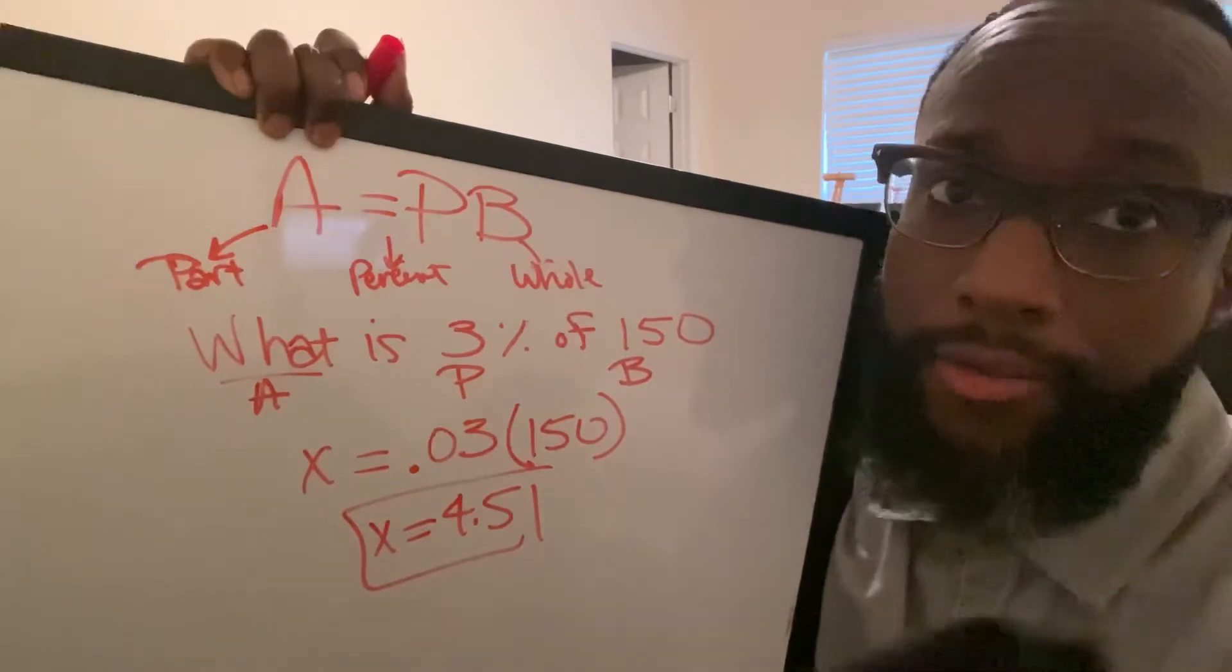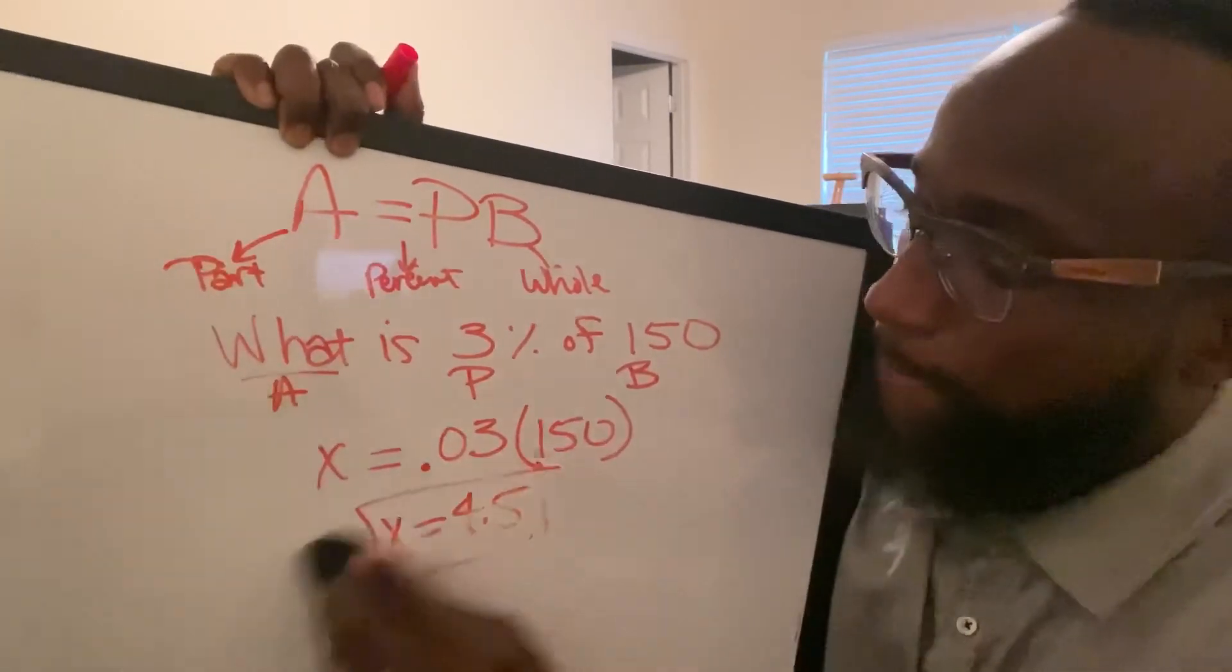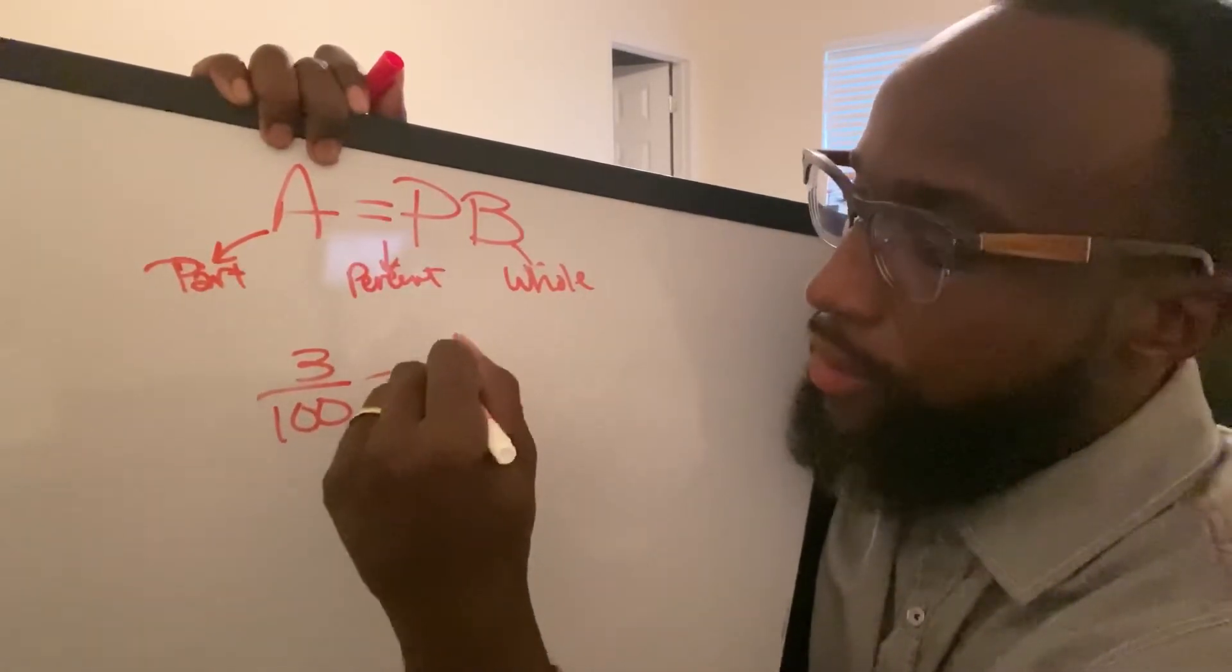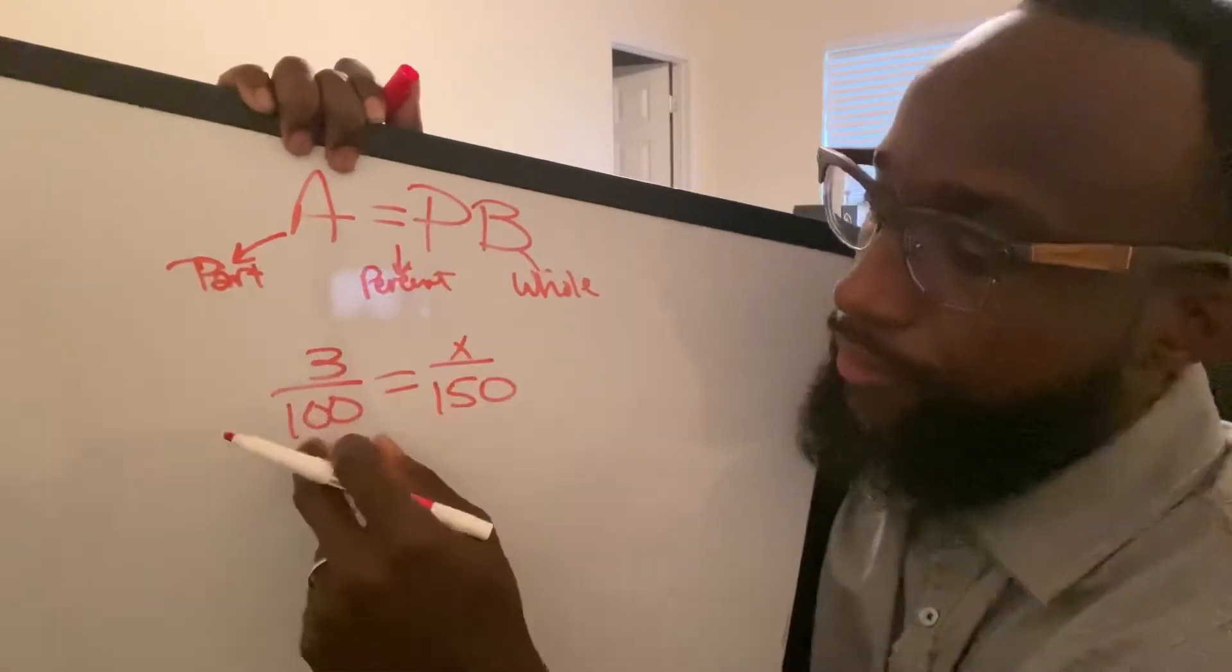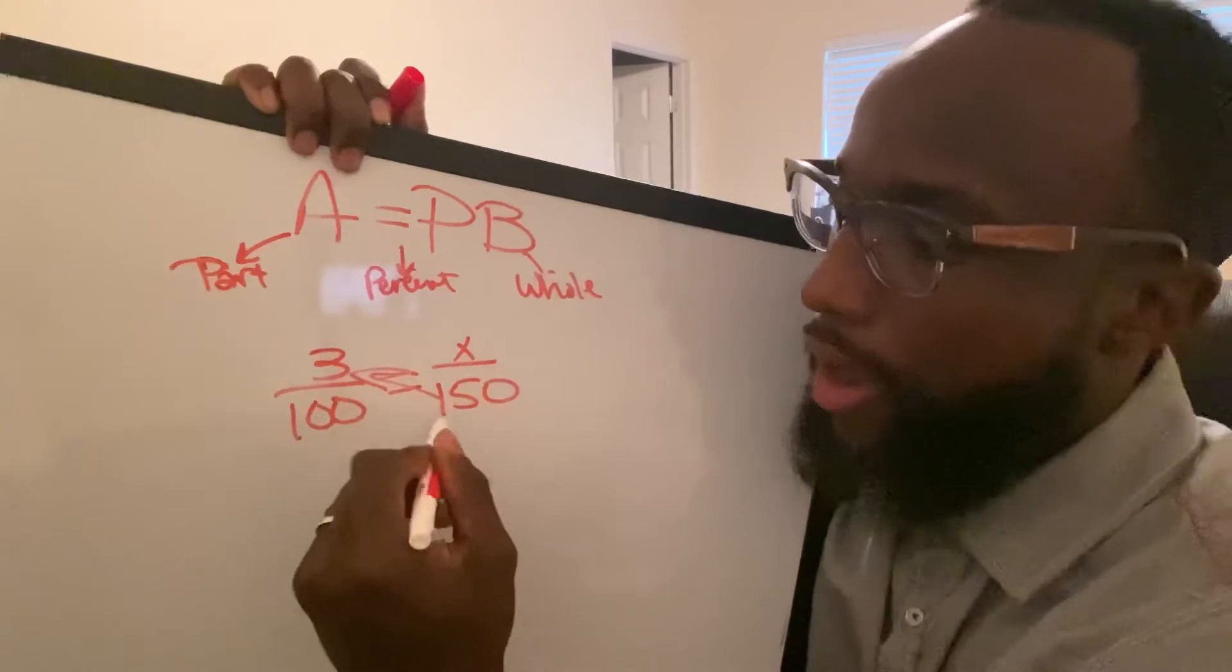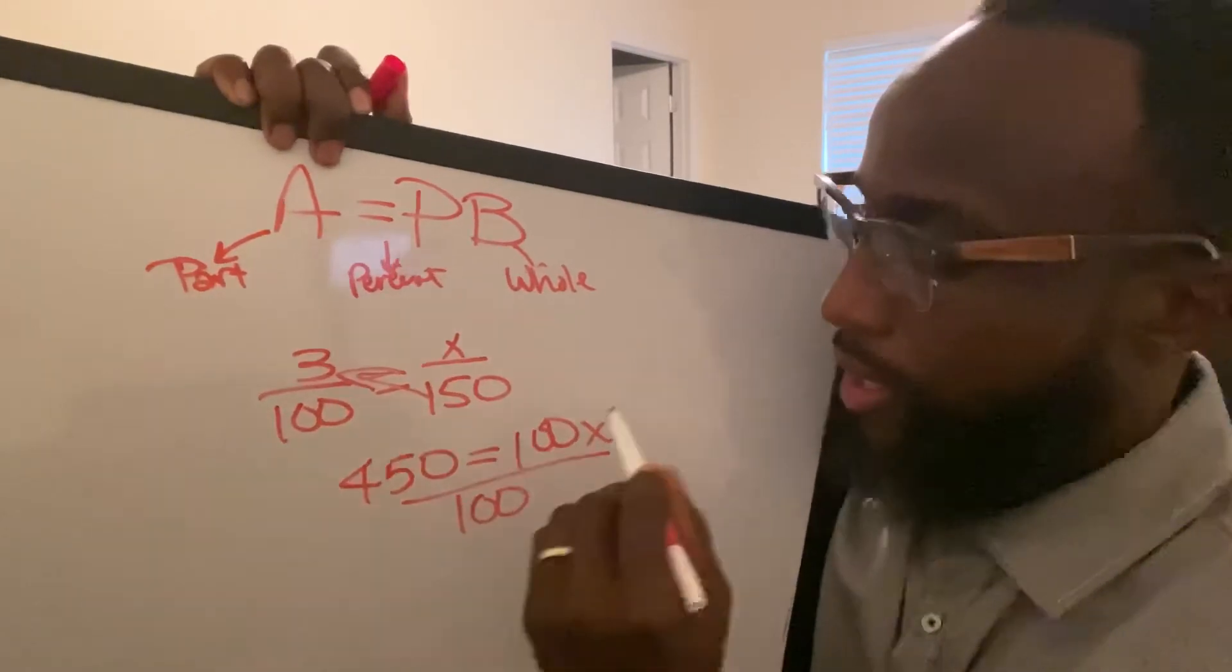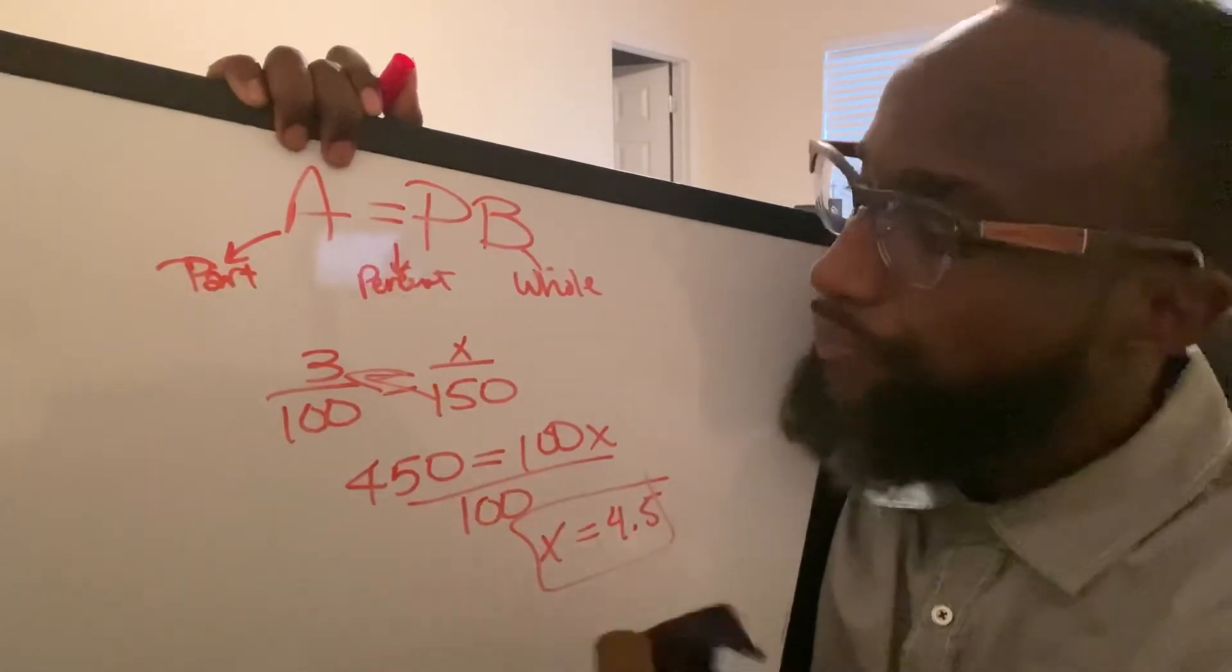Some of us are willing to learn that one, and then some of us need to see it the old way. This is the way I think of it. Let's look at it as a proportion. 3% is 3 over 100. What, we don't know - A is unknown. B is 150, so the whole number is 150. 3% of 150 is X. With proportions, you cross-multiply. So 3 times 150 is 450 equals 100X. From here, you divide by 100. X equals 4.5. That's the same as the last equation. That's one way to do it.